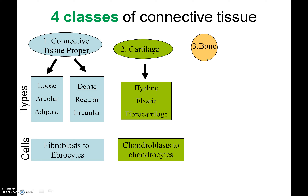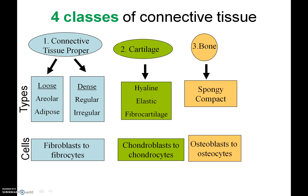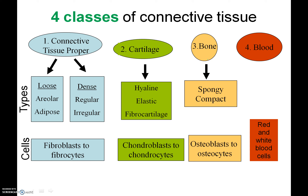Then there's bone — two main types: spongy or compact bone. Those cells are called osteocytes, and the immature form is osteoblast. The last category of connective tissue is blood, with red and white blood cells. Notice a trend: whenever you see the word 'blast,' that means it's the immature form of the cell, whereas 'cyte' is the mature cell.